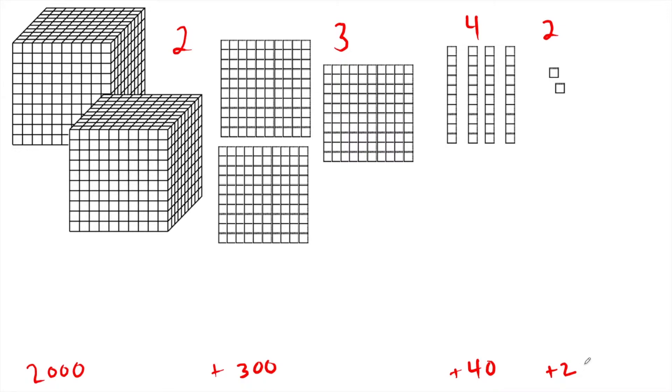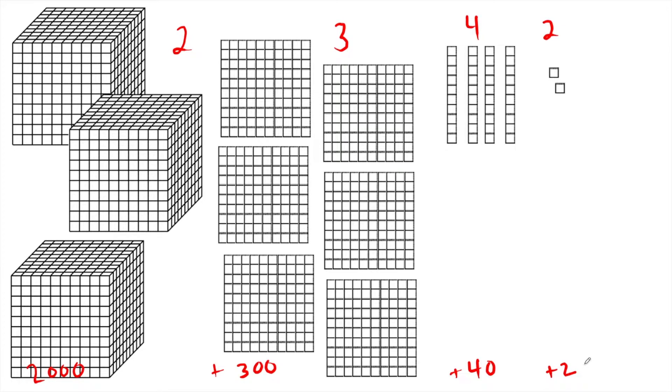Now let's add the number 1,300, 30, 2. The 2,000 and the 1,000 go together. The 300 and the 300 go together. The 40 and the 30 go together. The 2 and the 2 go together. You can look at the place value blocks and figure out this sum. What is the total amount we have now? How would I write this as a final number all put together, all the blocks?